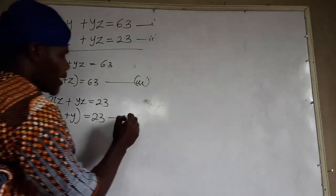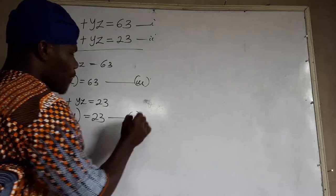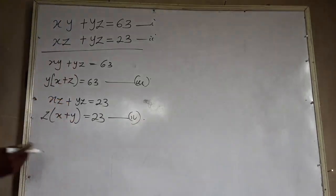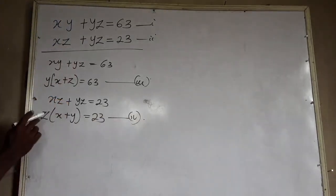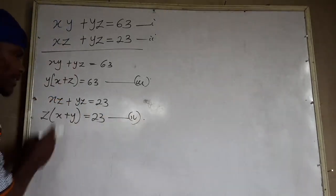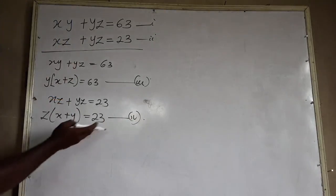From equation one, we have xy plus yz equal to 63. You realize that y is common, so y(x plus z) equals 63 — let's call this equation three. From equation two, z(x plus y) equals 23 — we call this equation four.